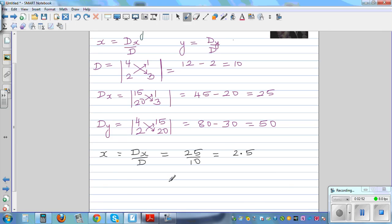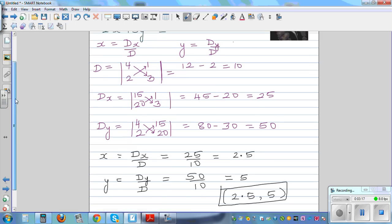Okay, and y is dy over d. What is dy? Your dy is 50 over 10 is equal to 5. So I can say the solution is 2.5 and 5 as a solution of this system of equations. That means if you put this in both equations, it is satisfied.